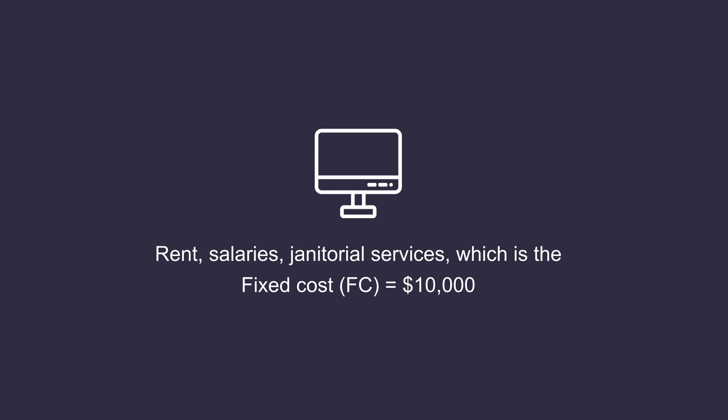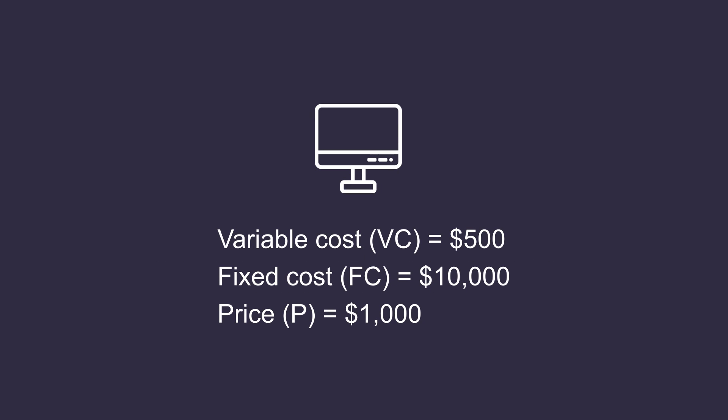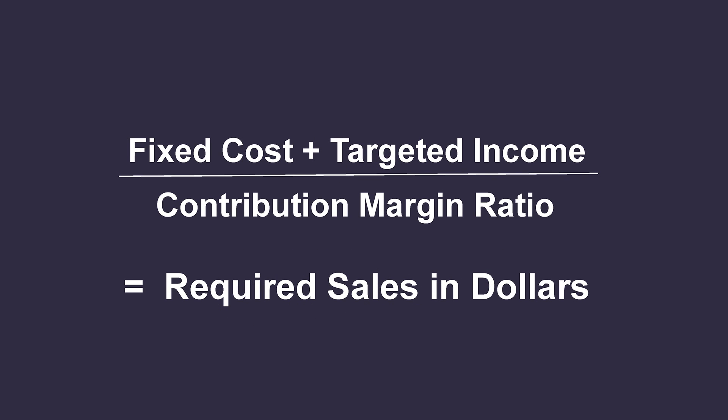Your monthly fixed cost — that is rent, salaries, etc. — is about $10,000. You want to sell the computer at a price of $1,000 per computer. How many computers do you have to sell per month to cover your fixed expenses and make a targeted profit? To answer this question, we need to understand the required sales in dollars.